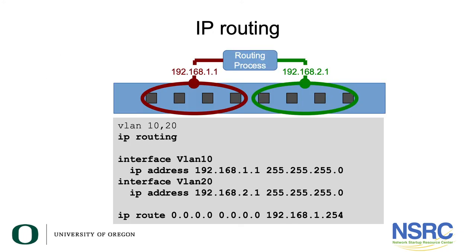In the diagram, the routing process sends packets between the two different VLANs on the switch. In the configuration example you can see the two VLANs defined. The keyword 'IP routing' has been added to turn on routing capability. We now have interface VLAN 10 with its address and VLAN 20 with its address in a different subnet. The default gateway has also been added so that management access and the VLANs on the switch can reach the rest of the world.